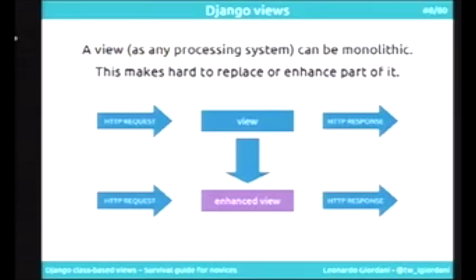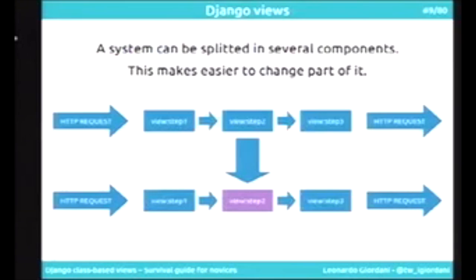The problem of any monolithic system in computer science is that it is very hard to enhance part of it. Because if you get a very big function, you have to copy that function and change the small part you want to enhance. And now you have duplicated code. And you know that duplicated code is an alias for evil. So the standard solution for monolithic systems is to componentize them, to split them in components.